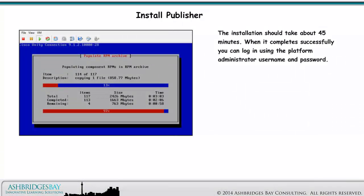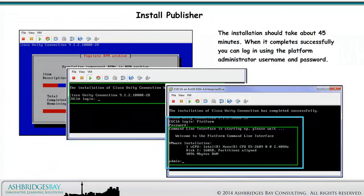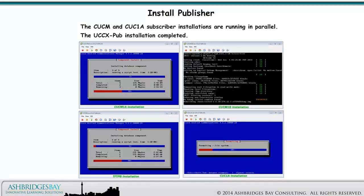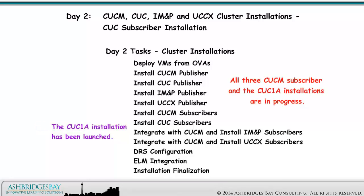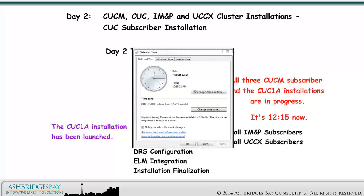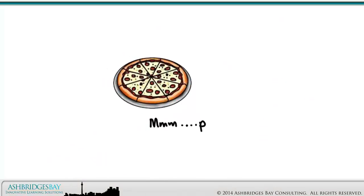The installation should take about 45 minutes. When it completes successfully, you can log in using the platform administrator username and password. The CUCM and CUC1A subscriber installations are running in parallel; the UCCX pub installation completed. All three CUCM subscriber and the CUC1A installations are in progress. It's 12:15 now — install the IM&P subscriber after lunch. Why don't you go get some right now?